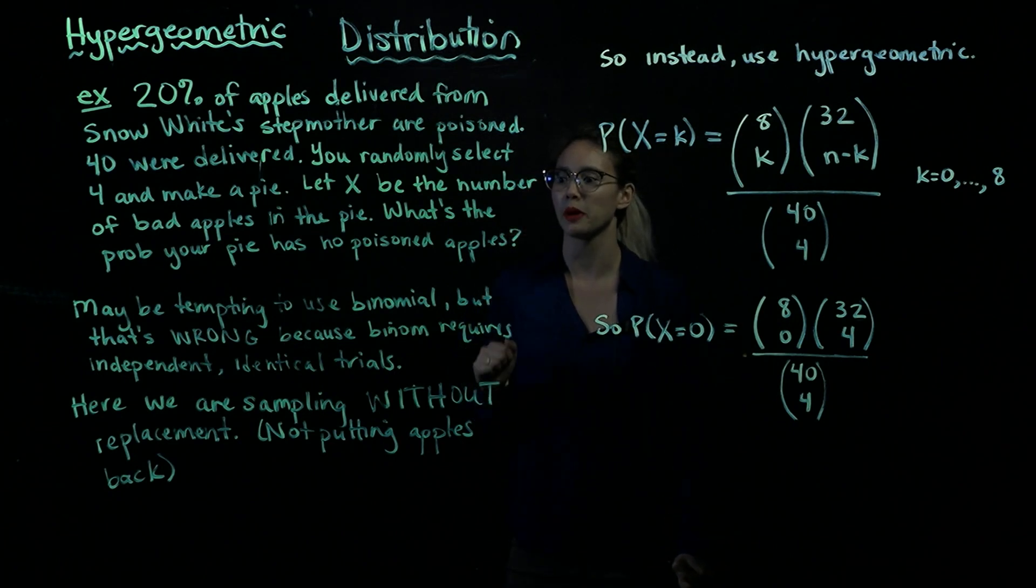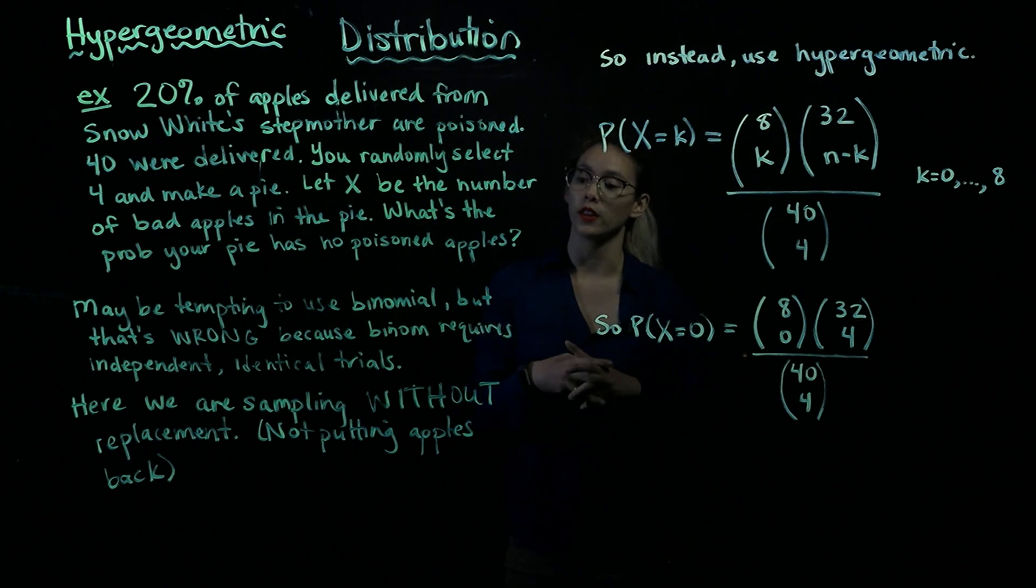All right, so we're not putting the apples back, so that makes things a little bit different. And now we're going to use this to introduce the hypergeometric distribution. So hypergeometric is when you'll be sampling without replacement.